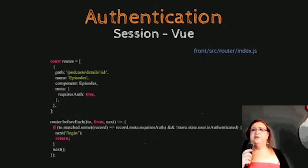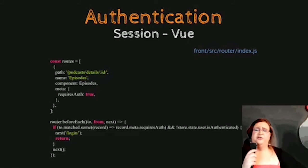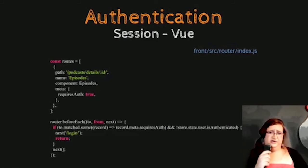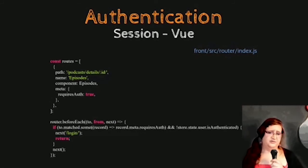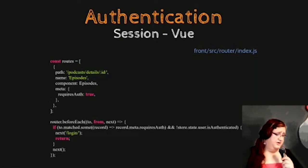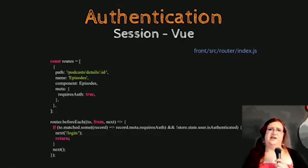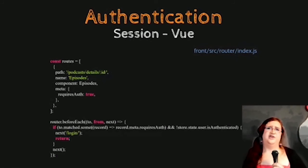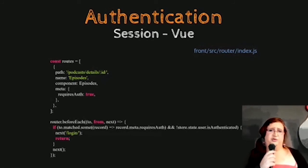Once your user is updated in the frontend, you can use it in many locations. One of the most useful is in the router. Here you can see a route with meta information — specifically, 'requires_login'. At the bottom of the screen, there is code that runs before each transition from one route to another. It checks if the route needs authentication, and if the user is not authenticated, it redirects the user to the login page instead of showing the requested page.